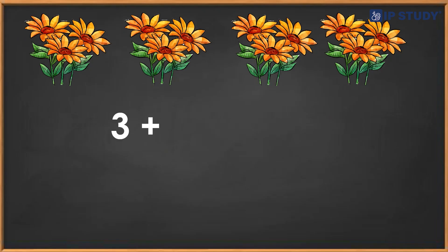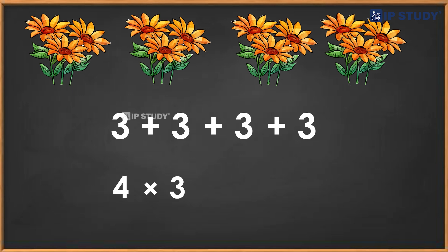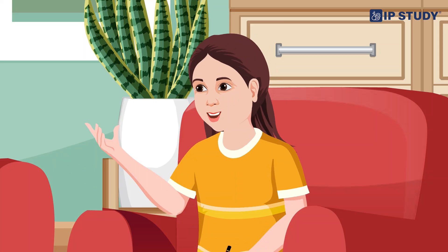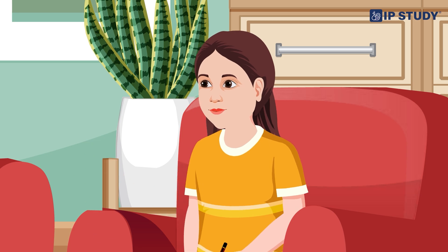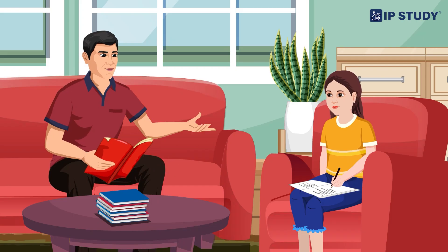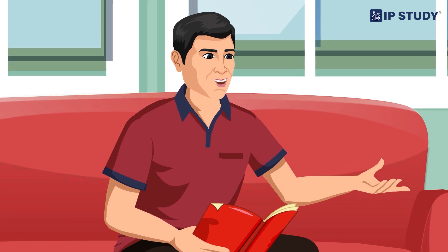Exactly! Instead of saying three plus three plus three plus three, we can say four times three equals twelve. We write it like this: four times three equals twelve. Oh, I get it now — we are adding three four times! That's right Urvashi, we call this repeated addition. Now let's try some more examples.